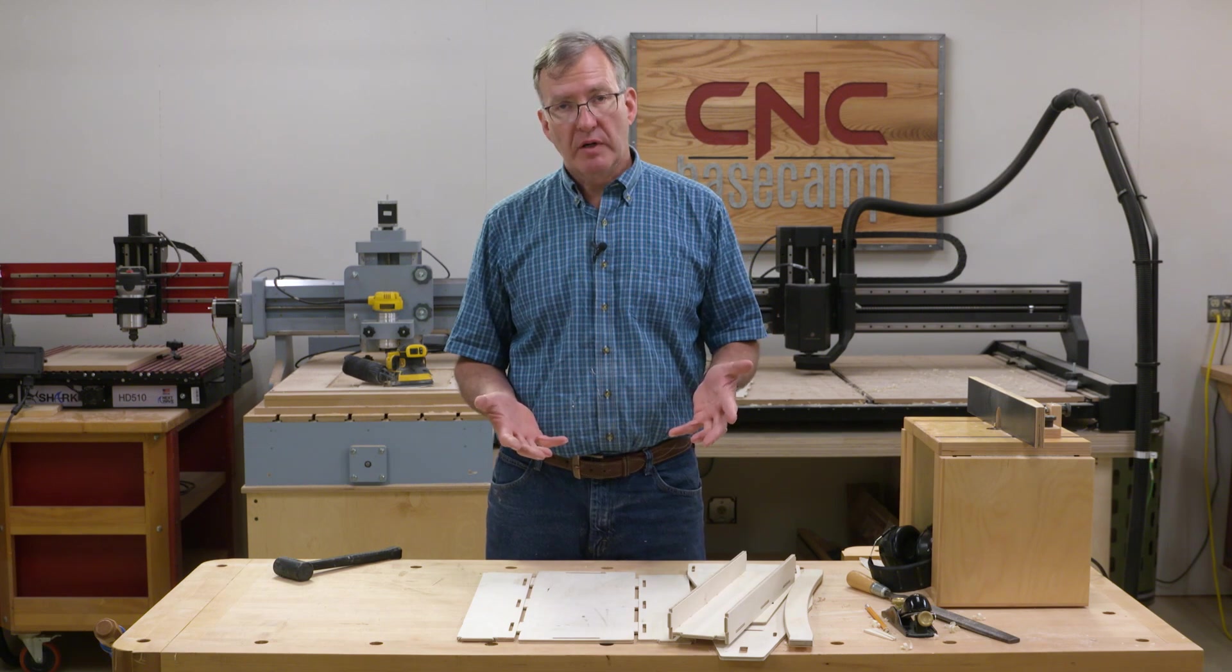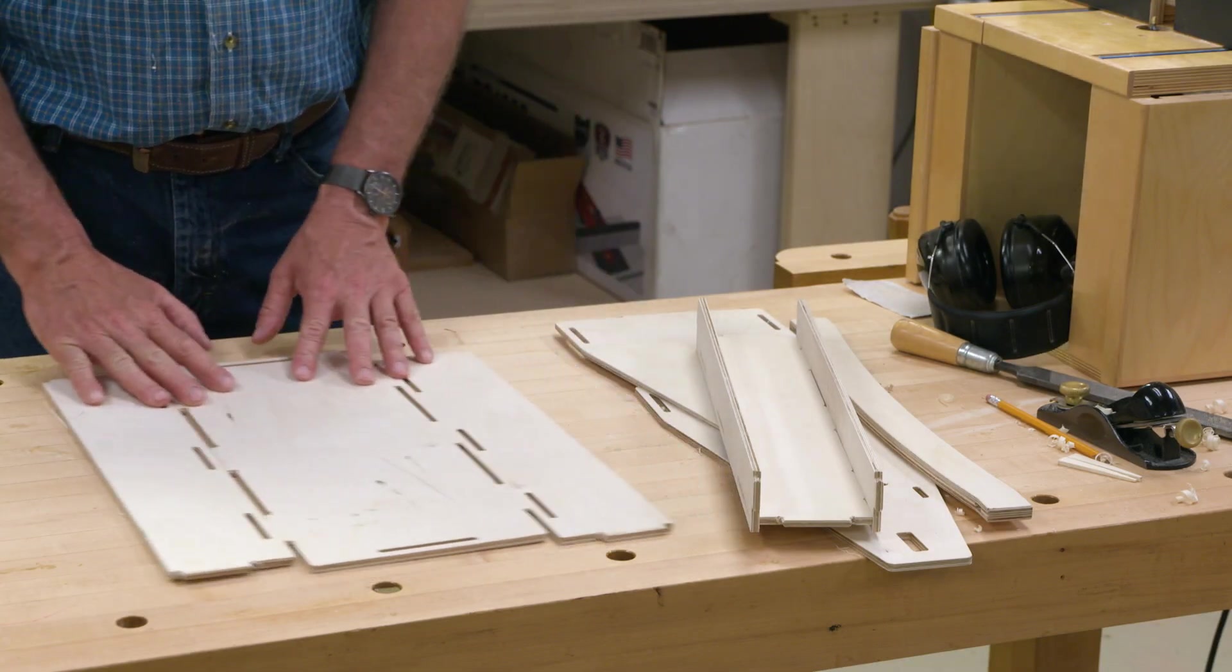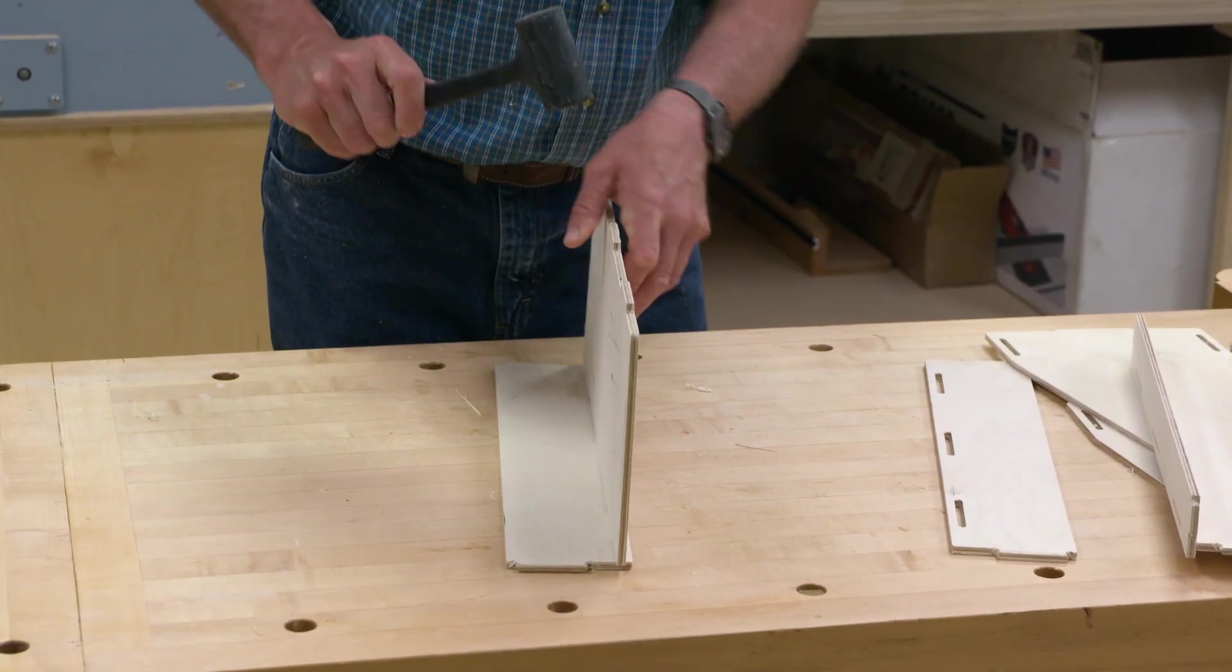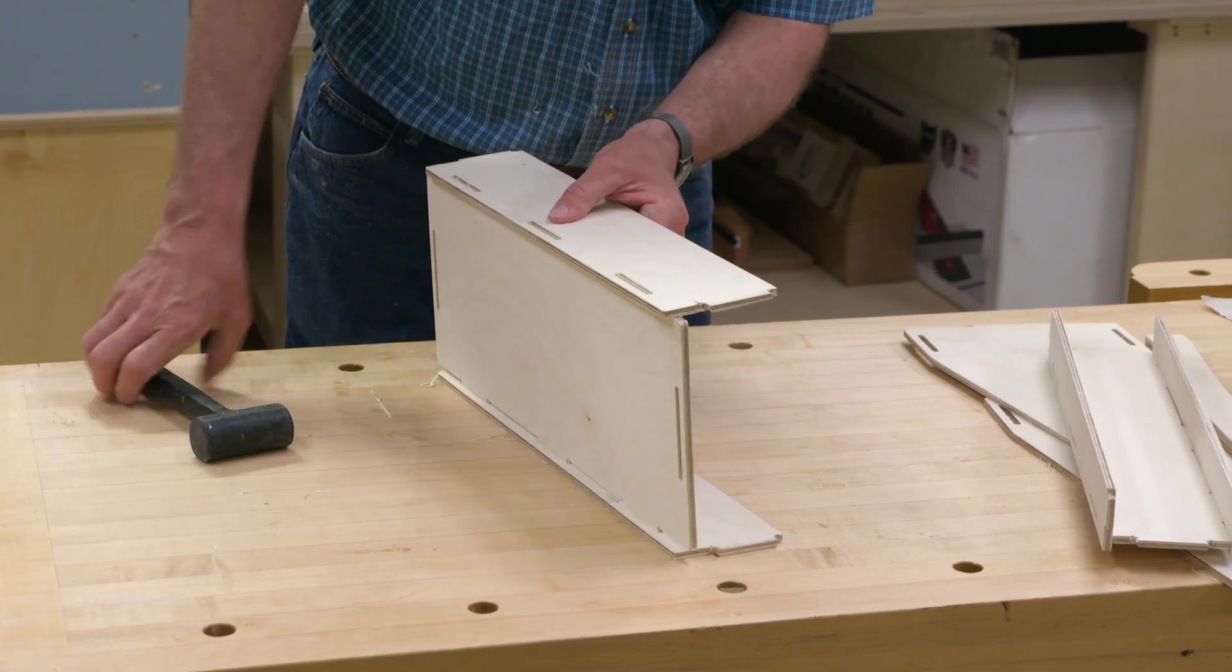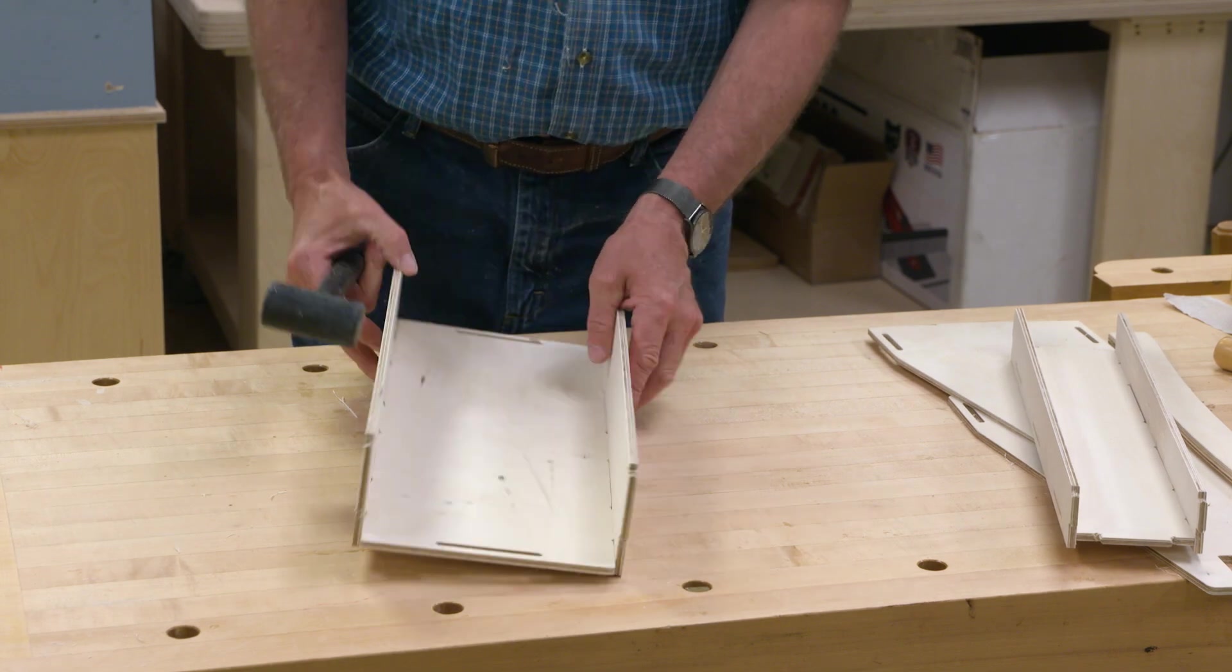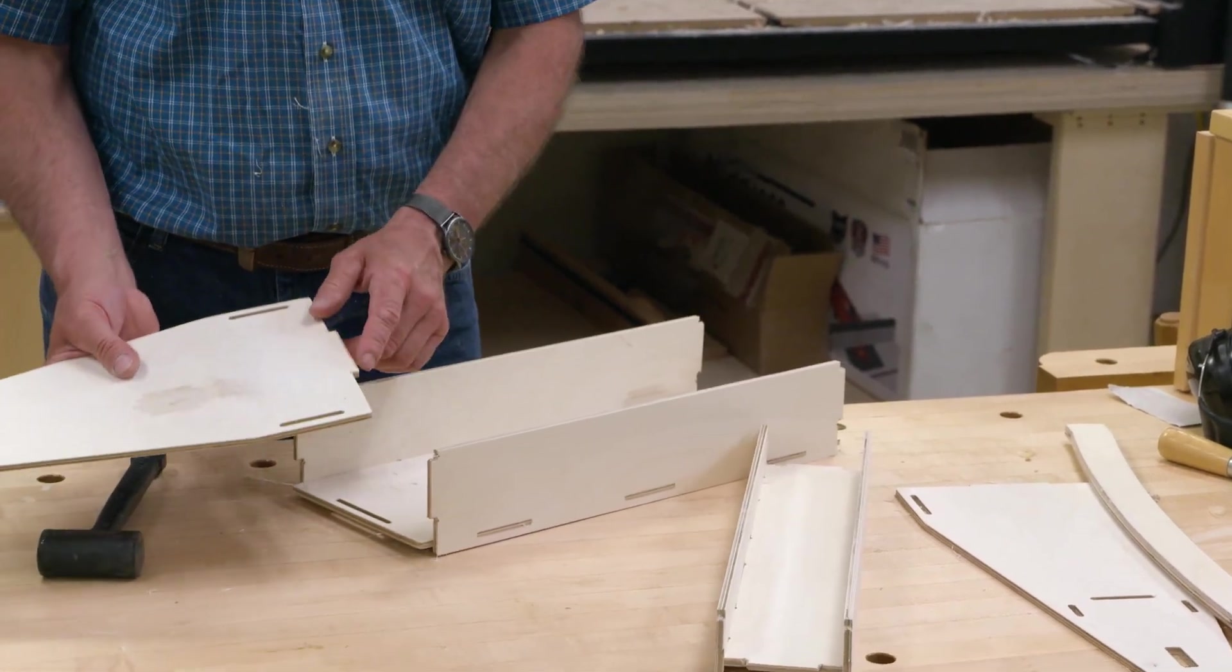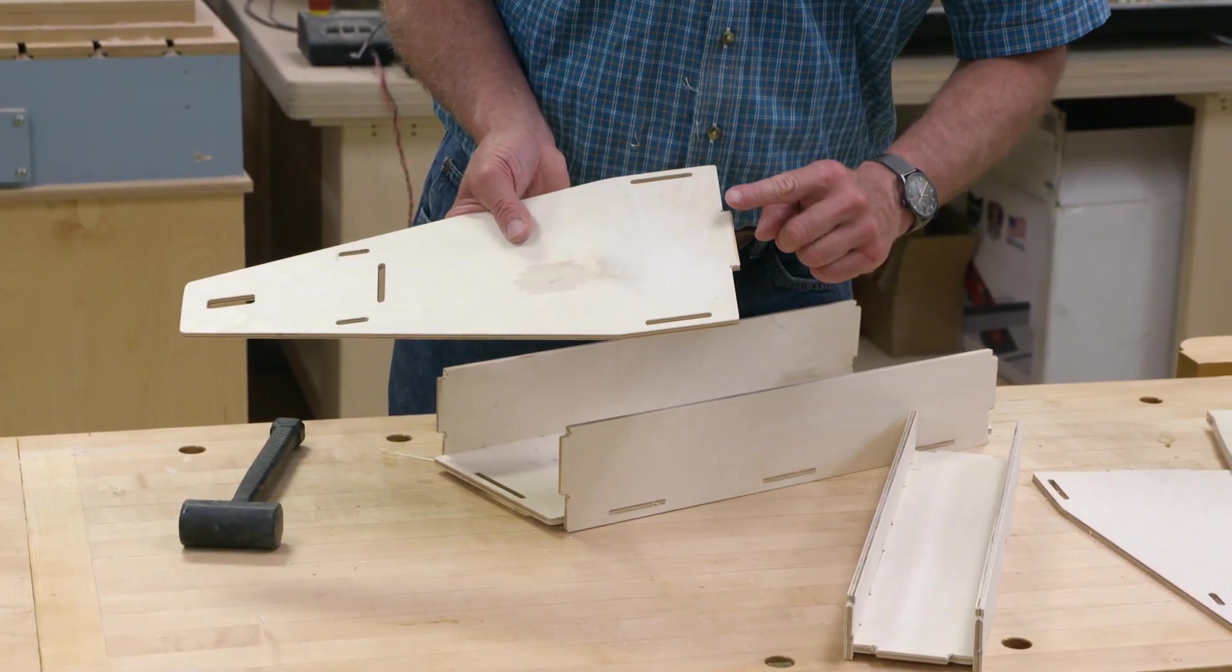So now it's time to go ahead and assemble one of our totes. They all follow a fairly similar pattern. This happens to be the tote with two tiers. The first thing I'm going to do is take my bottom and fit it to one of the sides.